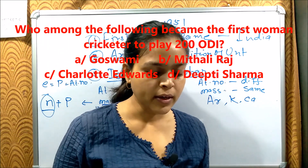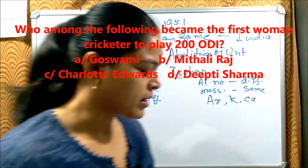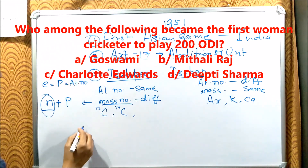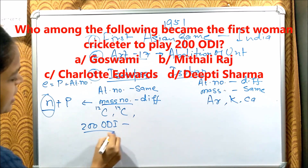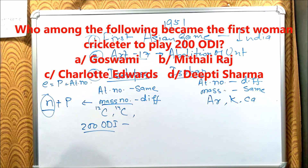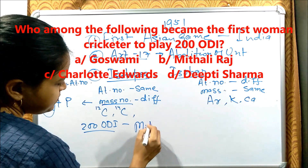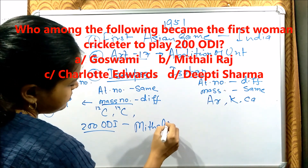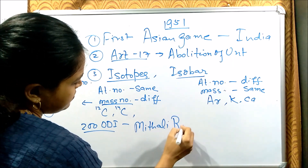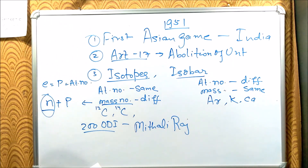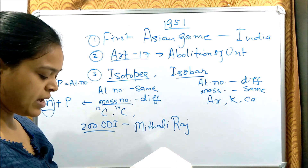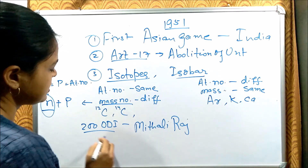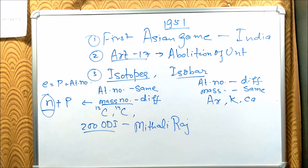Next question: Who among the following became the first woman cricketer to play 200 ODIs? The options include Goswami and Deepti Sharma, but the correct answer is Mithali Raj.